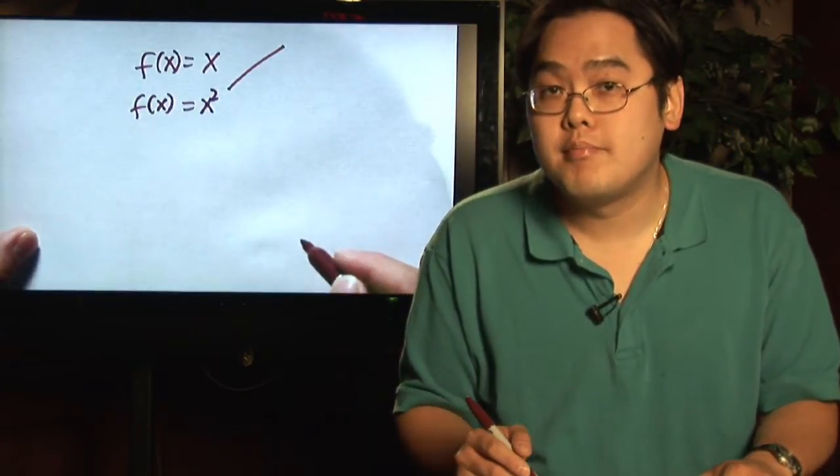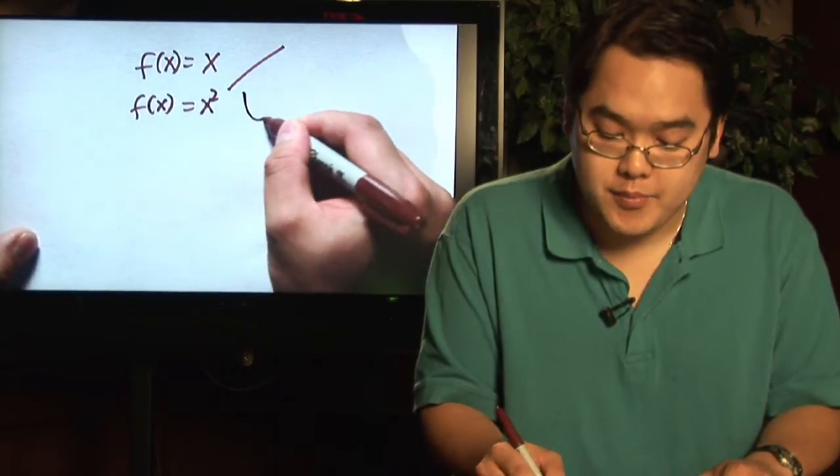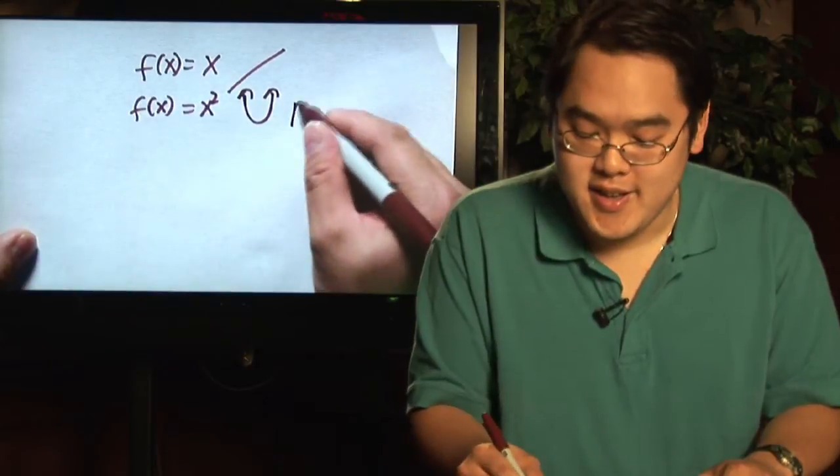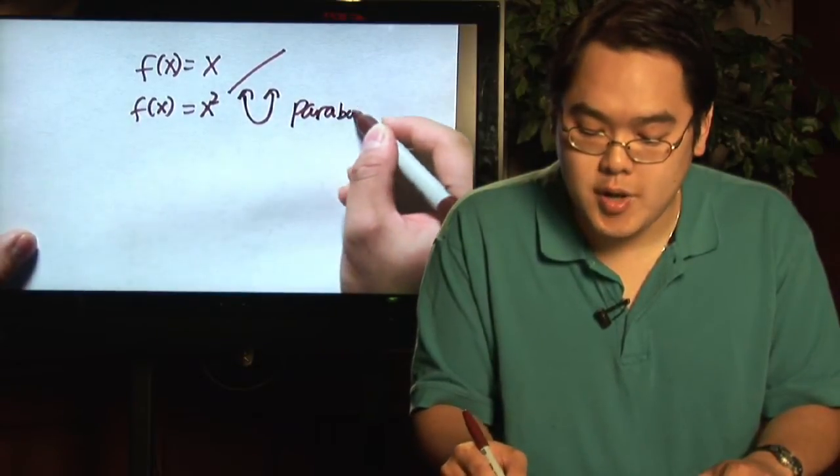If you have a function f(x) equals x squared, if you make a table of points, you'll find out that it looks like a happy face. This is also known as a parabola.